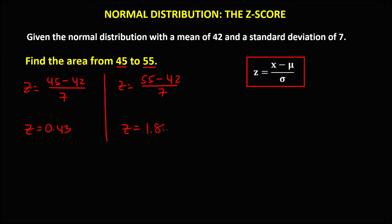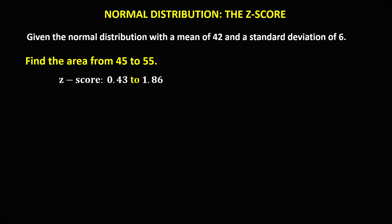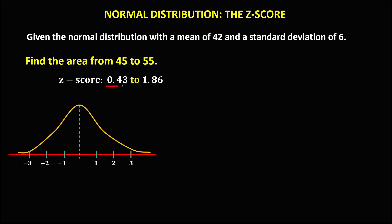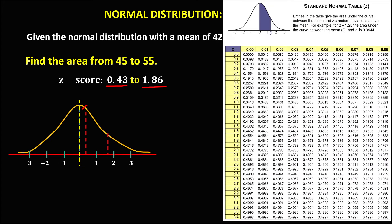So Z-scores are 0.43 and 1.86. Using these Z-scores to find the area from 0.43 to 1.86 — in a normal curve, this is positive 0.43 and positive 1.86, with the mean at center. For Z = 0.43, we look up row 0.4 and column 0.03. The area is 0.1664.